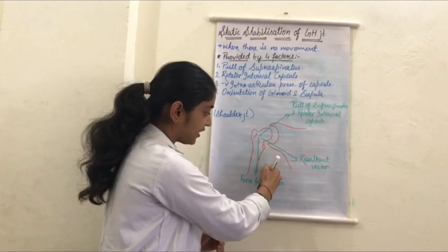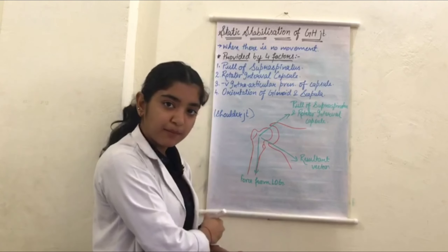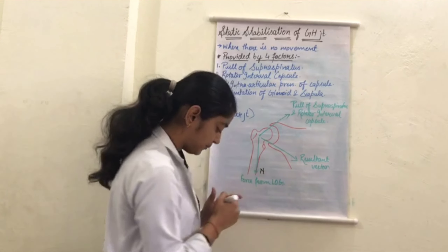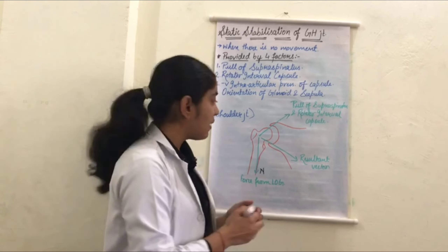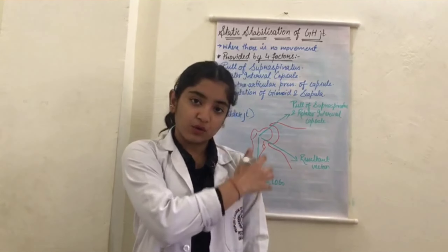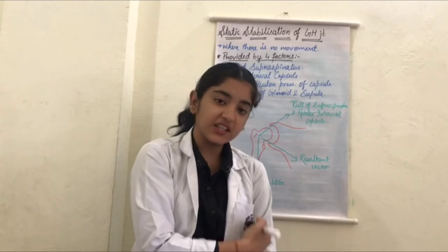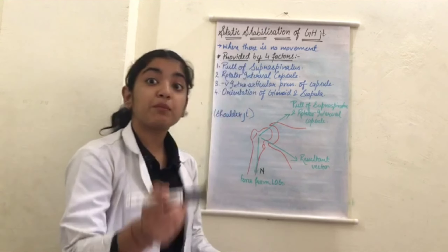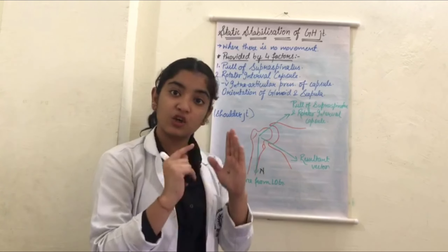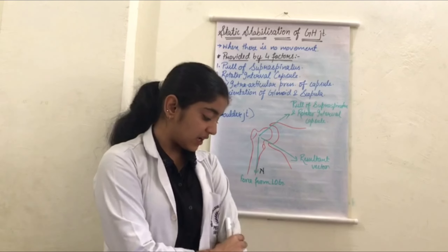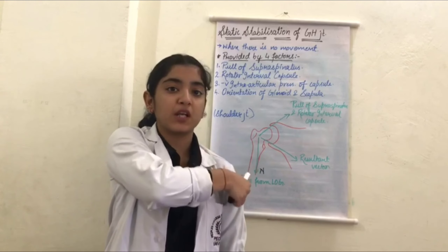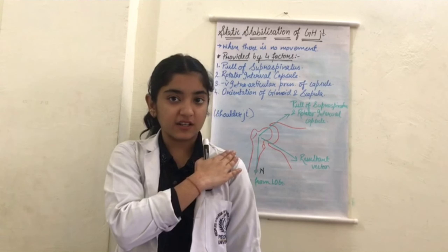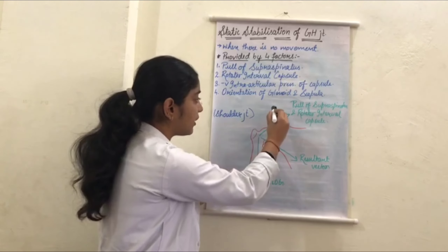Now let's study the biophysics of how these factors work. There is a line of gravity — also called the normal force, denoted as N — acting downward on the joint. For the joint to be stable, there must be an equal and opposite force to establish equilibrium. With equal and opposite forces balanced, there is no movement in the joint; it remains static and stable.